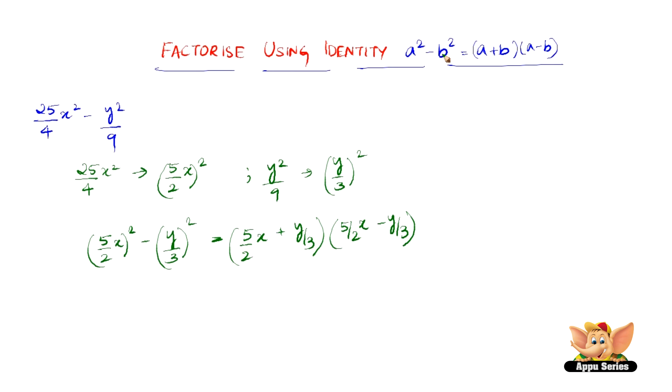Just similar to the identity a square minus b square equals a plus b into a minus b, and thus 5 x by 2 plus y by 3 into 5 x by 2 minus y by 3 is the factorized form of 25 by 4 x square minus y square by 9.